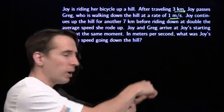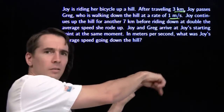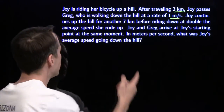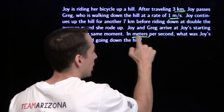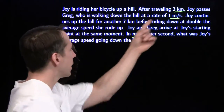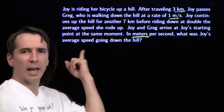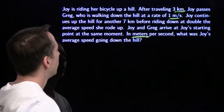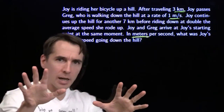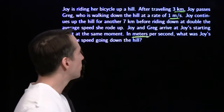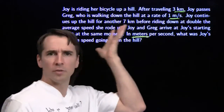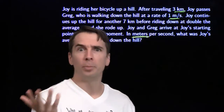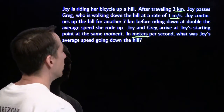Joy and Greg arrive at Joy's starting point down at the bottom at the same time. The question asks for meters per second, so we care about meters, not kilometers. What was Joy's average speed going down the hill? This definitely looks like one of those rate times time equals distance problems, but I can't see what sort of equation to build, so I'm going to try to draw a picture because then maybe I'll be able to see it.